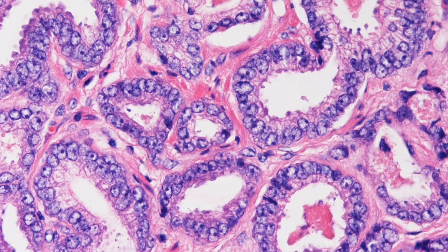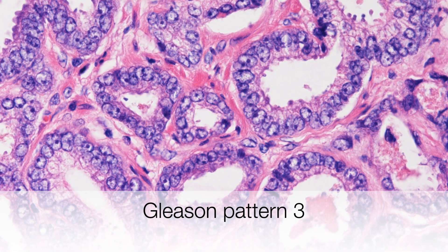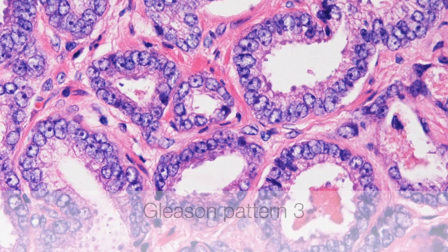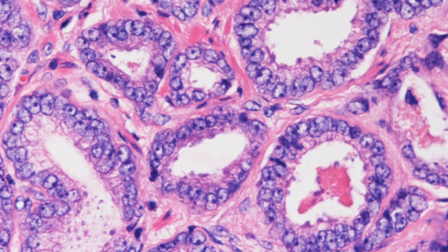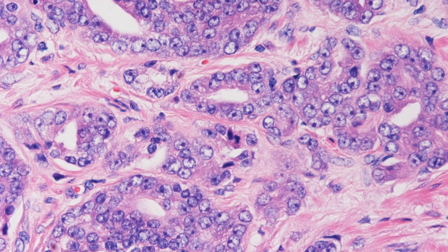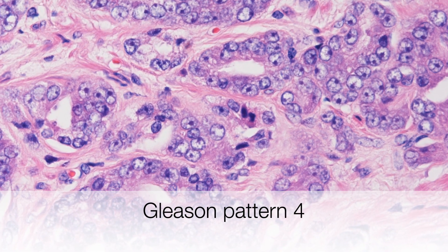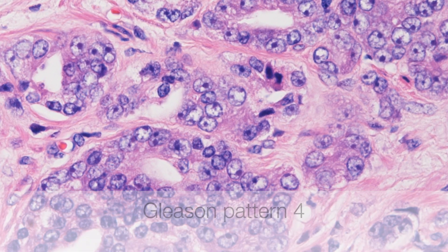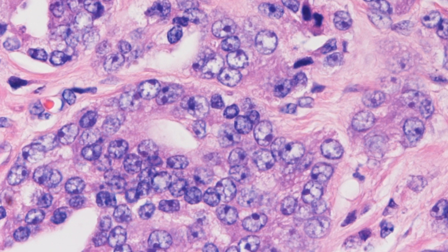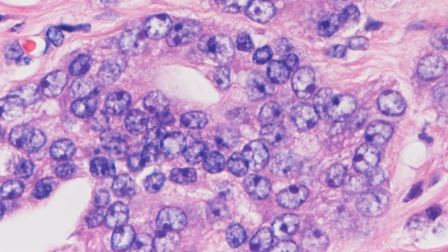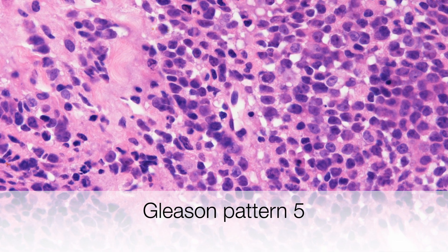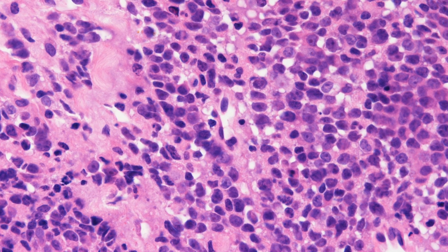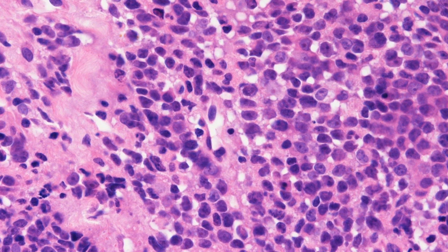Here are three examples of different patterns. This is an example of Gleason pattern 3 with individual glands. This is an example of Gleason pattern 4 with a cribriform pattern and fusion of glands. And finally, this is an example of Gleason pattern 5 with sheets of cells that are not forming individual glands.